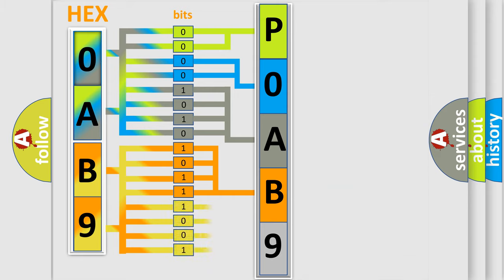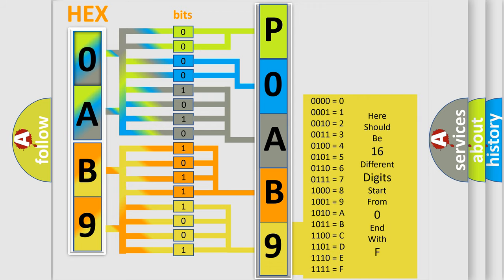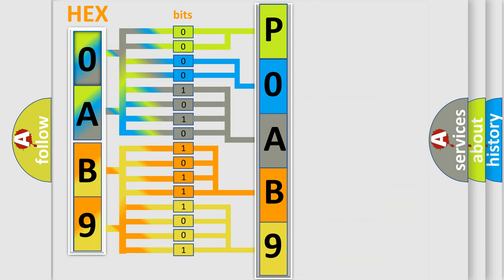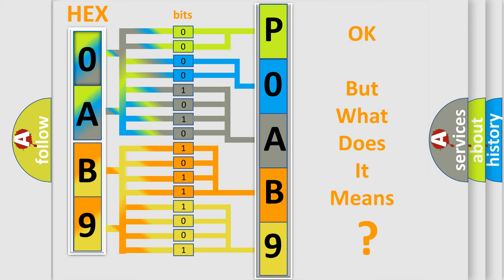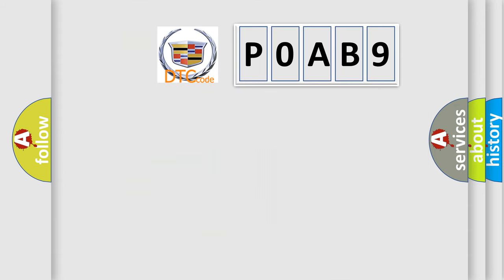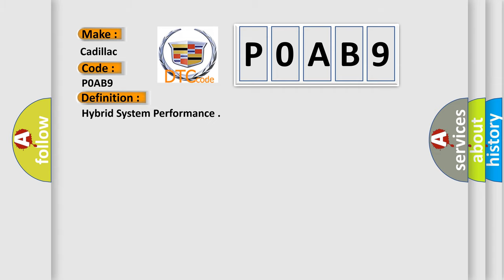A single byte conceals 256 possible combinations. We now know in what way the diagnostic tool translates the received information into a more comprehensible format. The number itself does not make sense if we cannot assign information about what it actually expresses. So, what does the diagnostic trouble code P0AB9 interpret specifically for Cadillac car manufacturers? The basic definition is: Hybrid system performance.